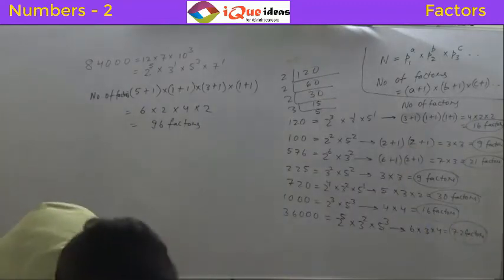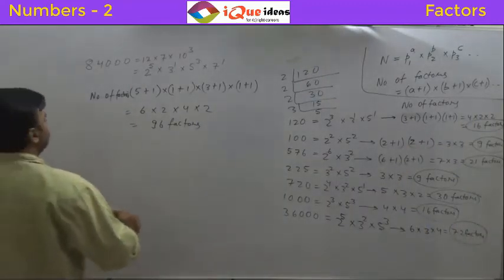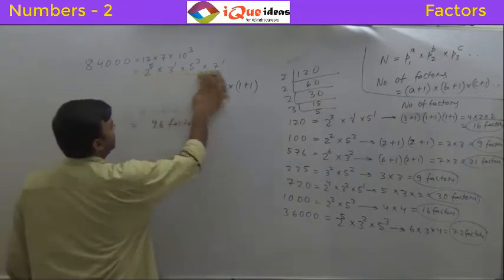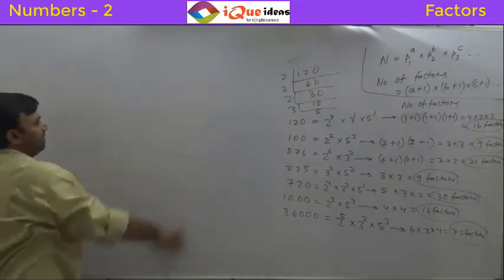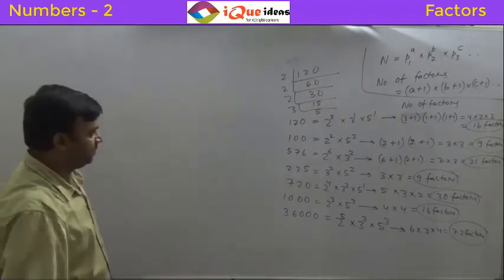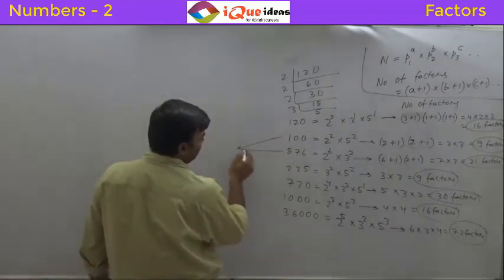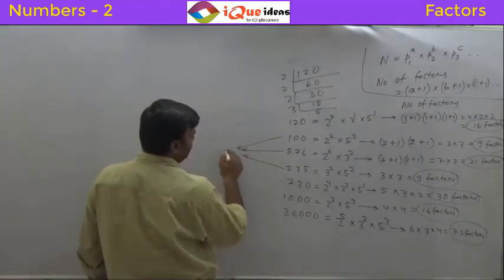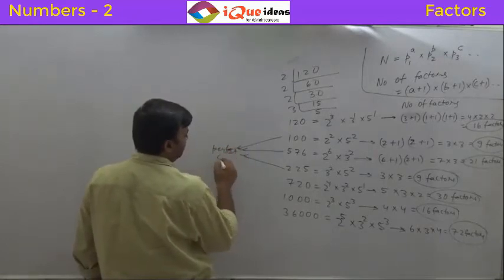Now some observations. One very simple observation is: can you identify the perfect squares out of the numbers that I have given to you? Which ones are the perfect squares? 100 is a perfect square, 576 is a perfect square, 225 is a perfect square. These are all perfect squares.